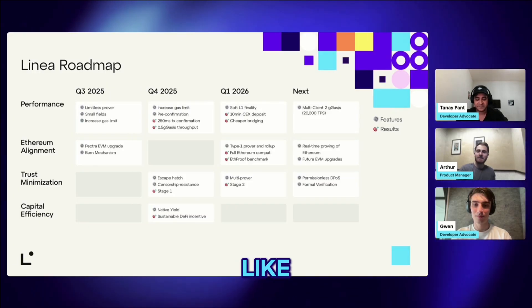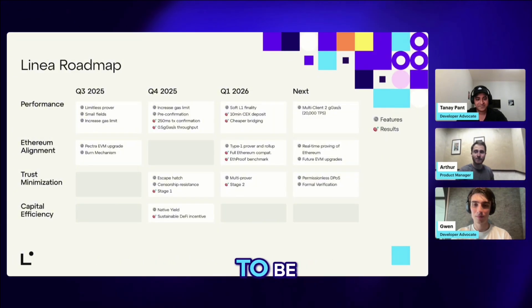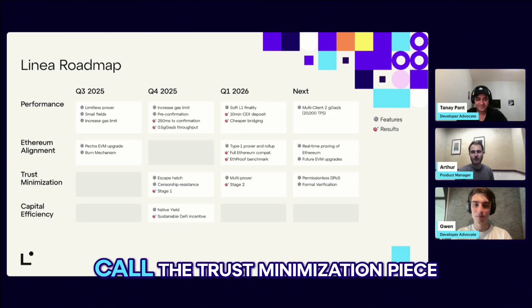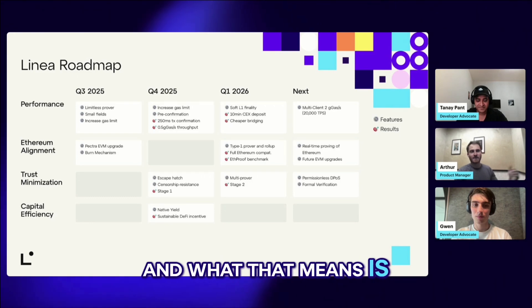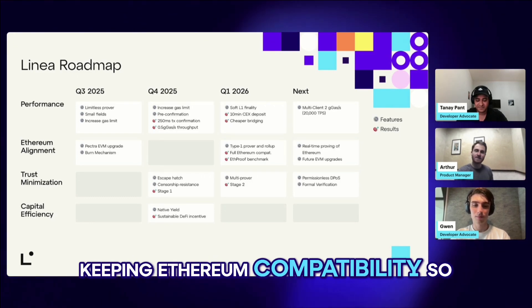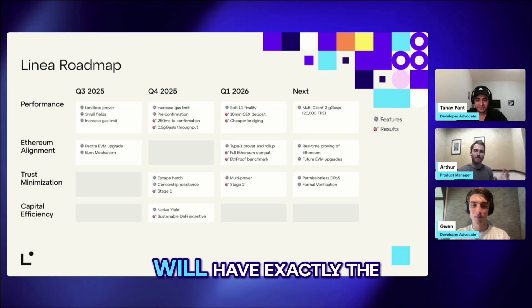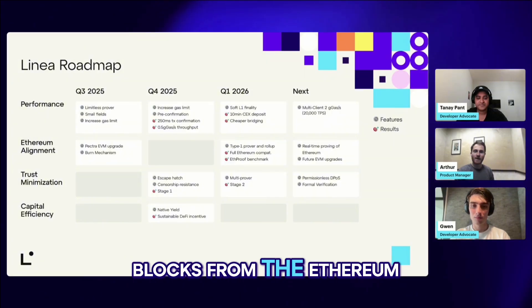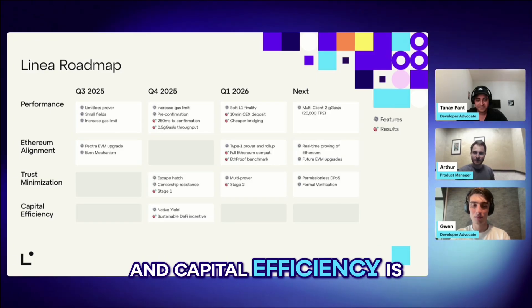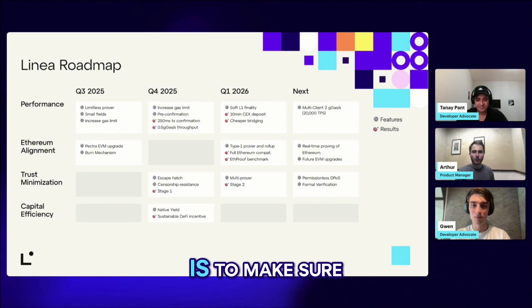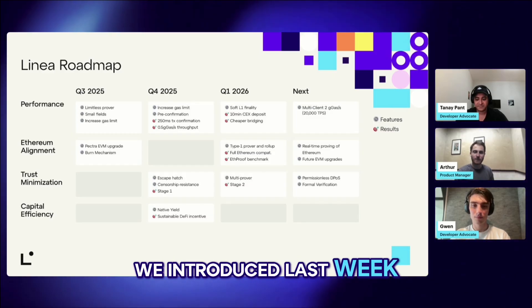So what you want from a blockchain is for it to be fast and cheap — that's the performance piece. You also want it to be very safe and secure, which is what we call the trust minimization piece. One thing special to Linea is that we want to be very ethereum aligned — from a technical perspective, keeping ethereum compatibility, and later moving to a Type 1 zkVM, which means we can also prove blocks from ethereum and scale ethereum directly. Capital efficiency is a new thing we are introducing: the core idea is to make sure users on-chain can have very good returns, and for this we introduced the native yield last week.